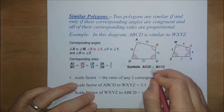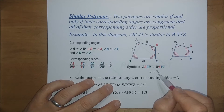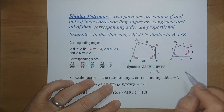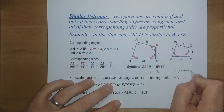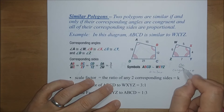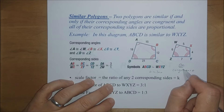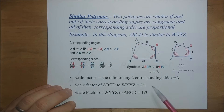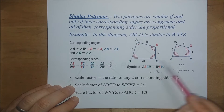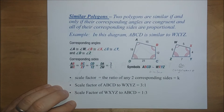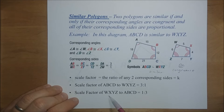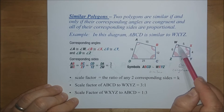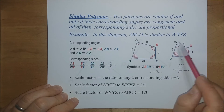The similarity symbol is a tilde — not to be confused with the congruence symbol which has an equal sign underneath. The scale factor of ABCD to WXYZ was 3 to 1. You could also state the scale factor of WXYZ to ABCD, which would be 1 to 3, because comparing a side here with its corresponding side in the other polygon gives you 5 over 15, which is 1 to 3.